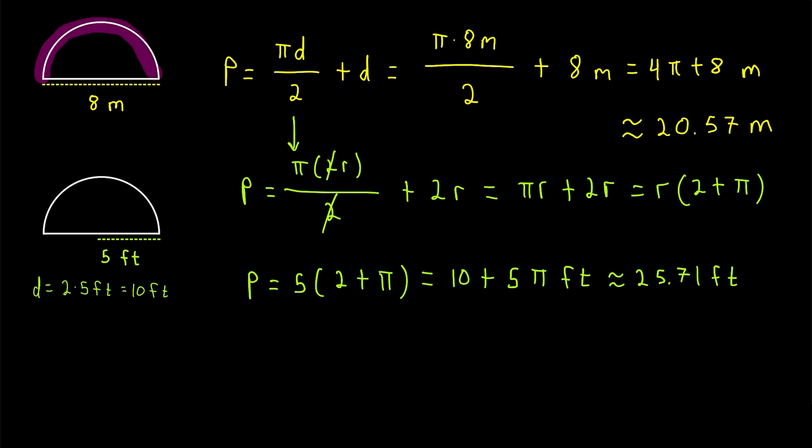And that's how you calculate the perimeter, the distance around a semicircle from the diameter or from the radius. We just have to take half of the circumference of a whole circle with the given diameter or radius, and then add the given diameter or add 2 times the given radius.